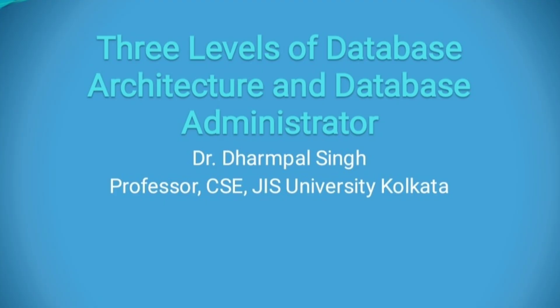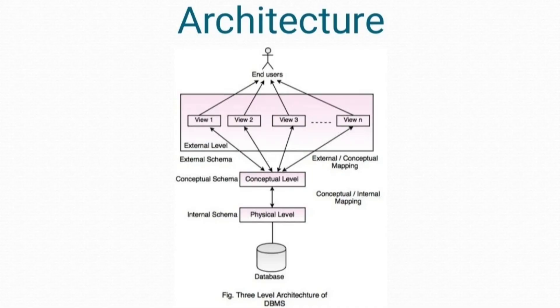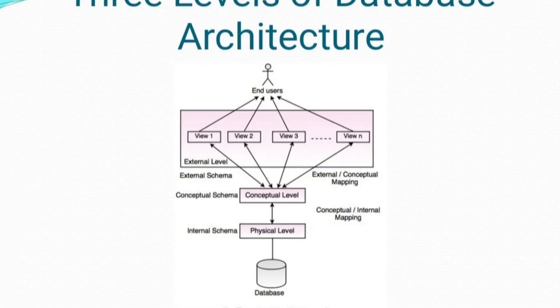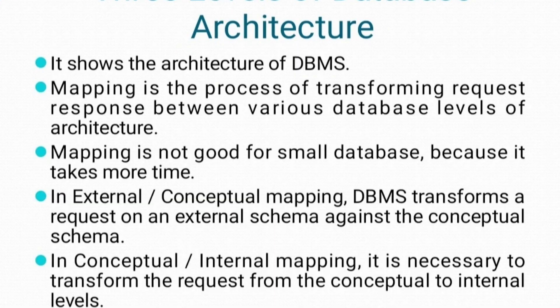First, why do we need this architecture? In a bank, different people need different views of the same database. A customer wants to see their balance and transactions, a cashier handles daily account operations, and a loan officer looks at loan records. At the same time, the system must store everything securely and efficiently. To manage this, DBMS uses the three-level architecture, which provides data abstraction, data independence, and security.